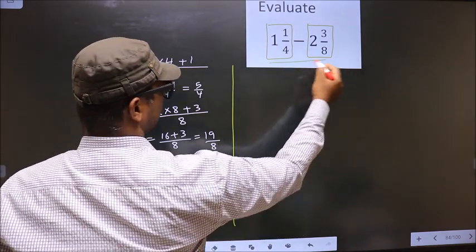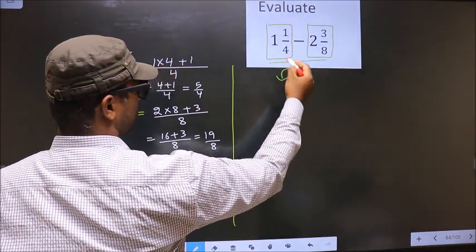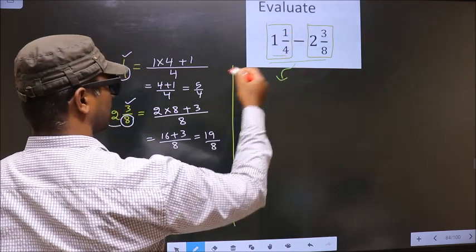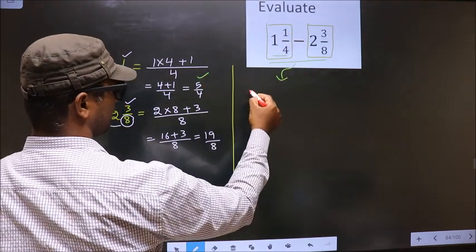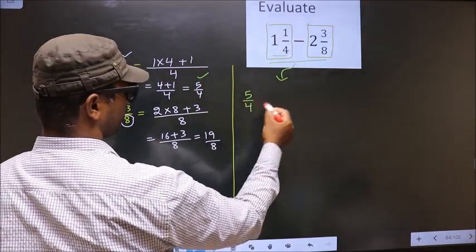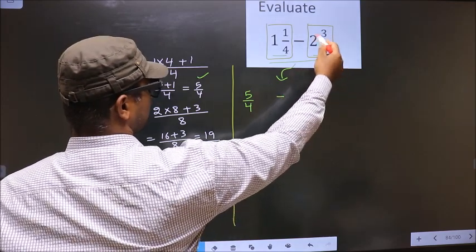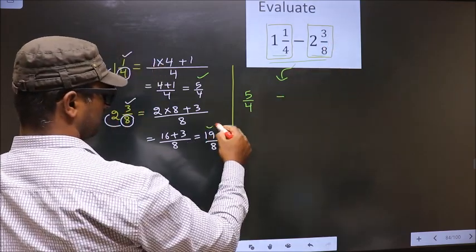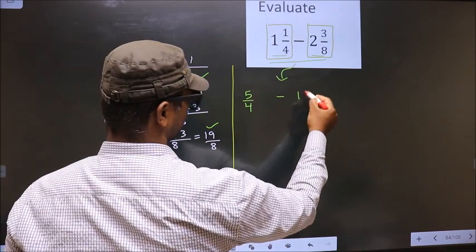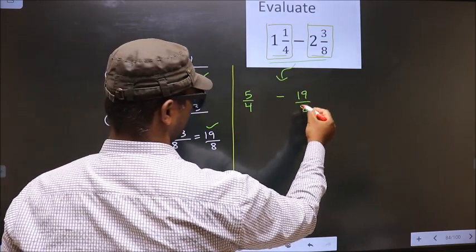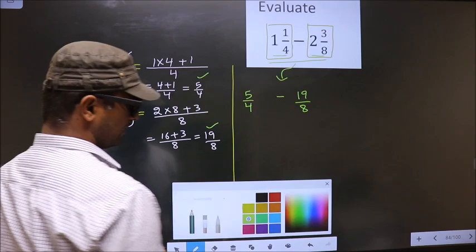Now, this entire thing will change. In place of this, we write this one, that is 5 by 4 minus 19 by 8. Next.